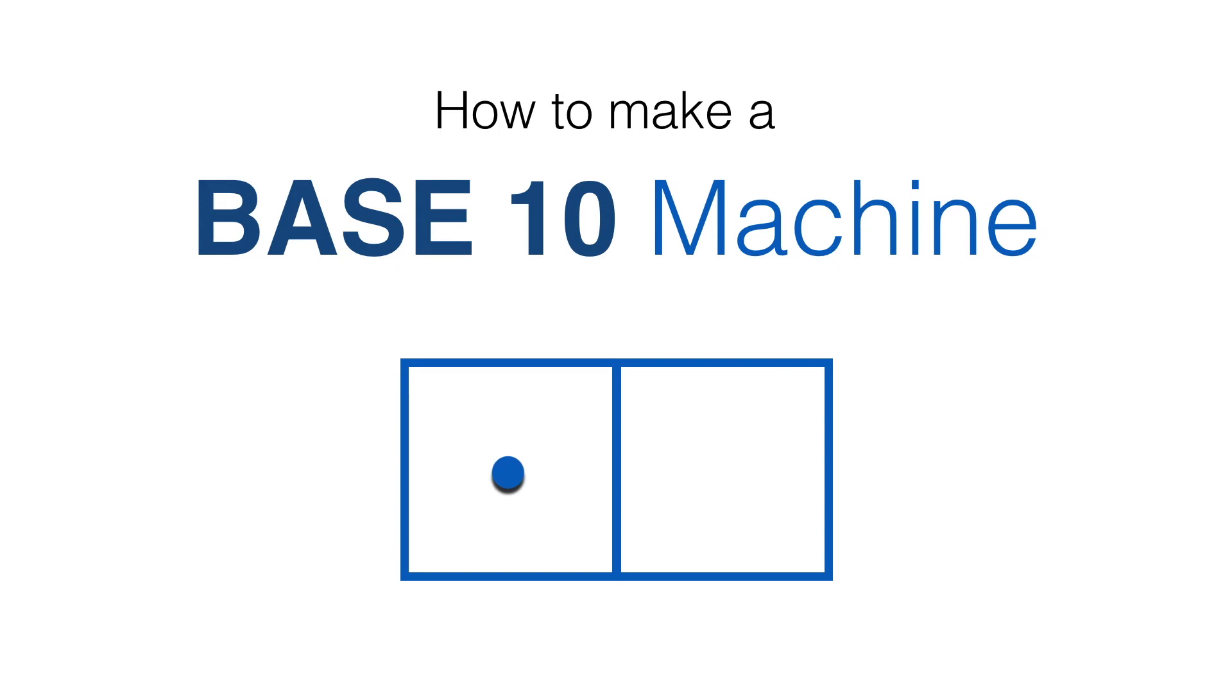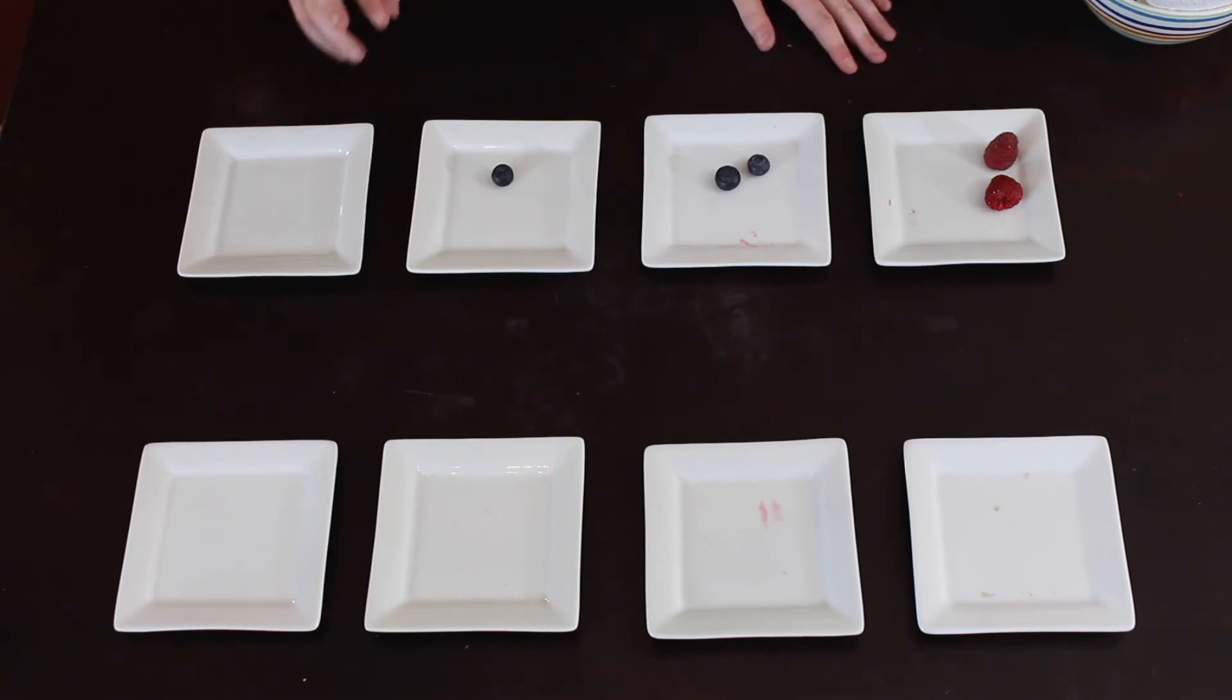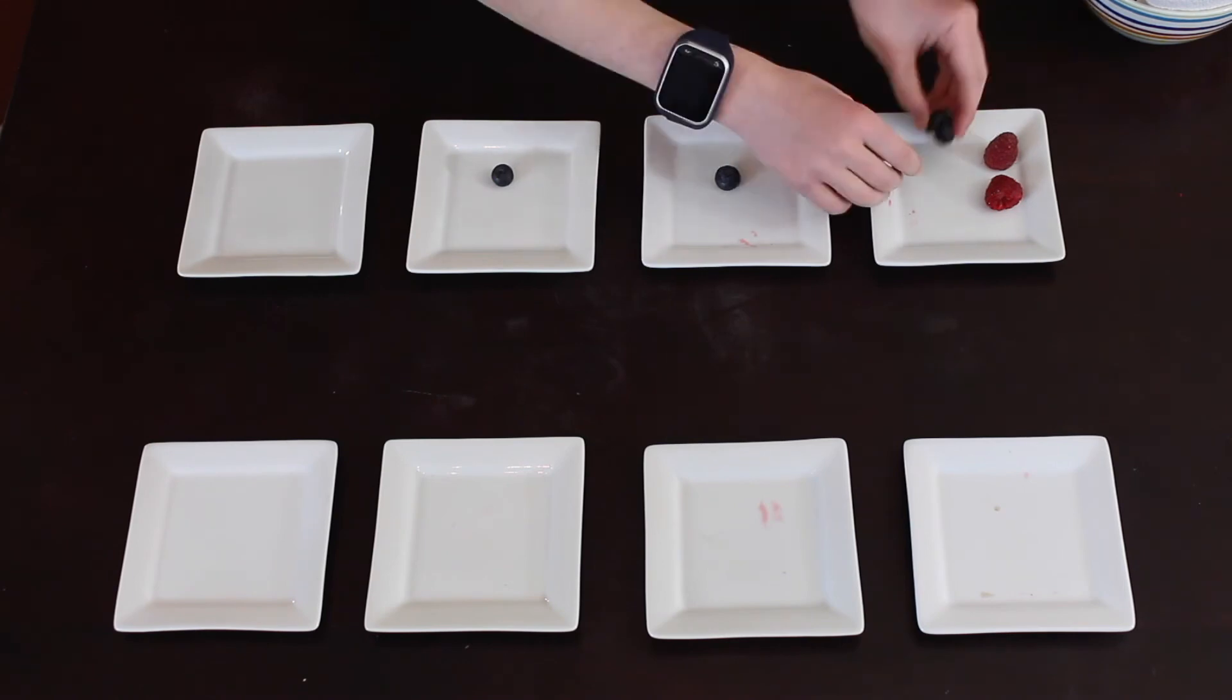we can also use that rule going in the opposite direction. So one dot on the left can go to 10 dots on the right. Let's try the base 10 rule in the other direction: one dot on the left goes to 10 dots on the right.